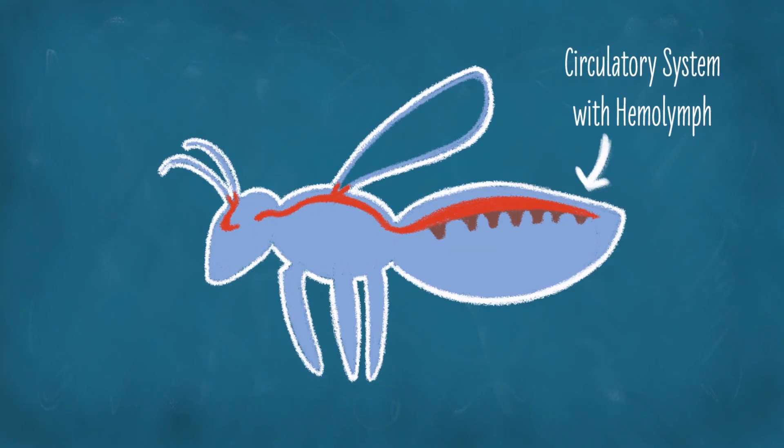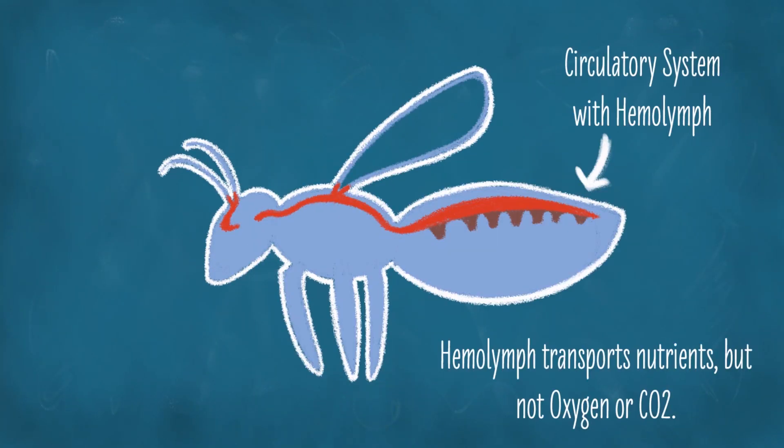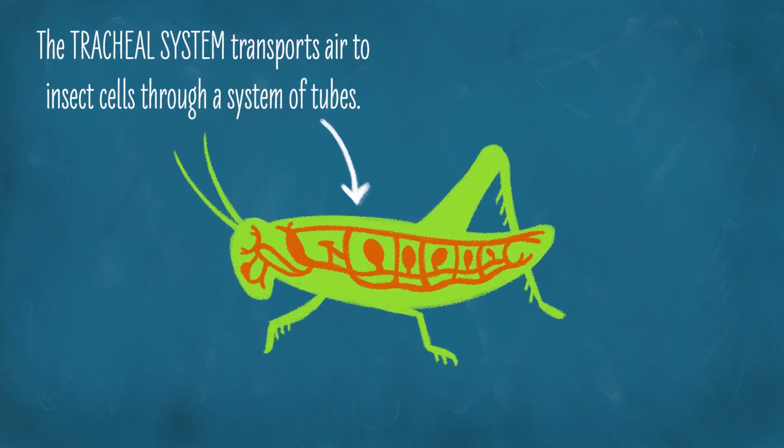What if you don't have any blood, like an insect, or you don't have a circulatory system, like the flatworm? Insects don't have blood, but they do have a circulatory system. What do they circulate? Hemolymph. While the hemolymph of insects transports many nutrients, it does not transport oxygen or CO2. They do not have lungs — without a circulatory system that transports oxygen and CO2, you can't have lungs.